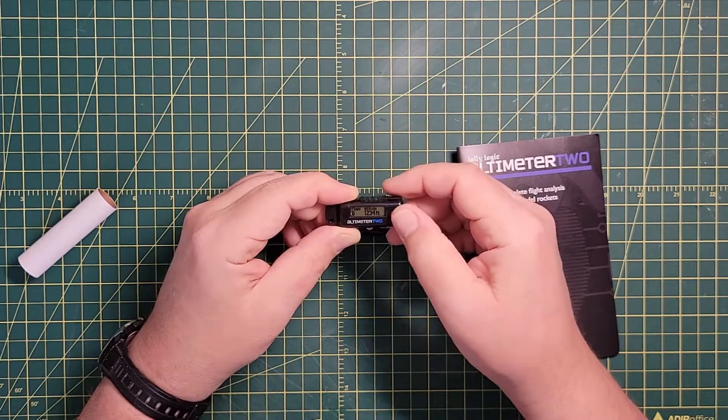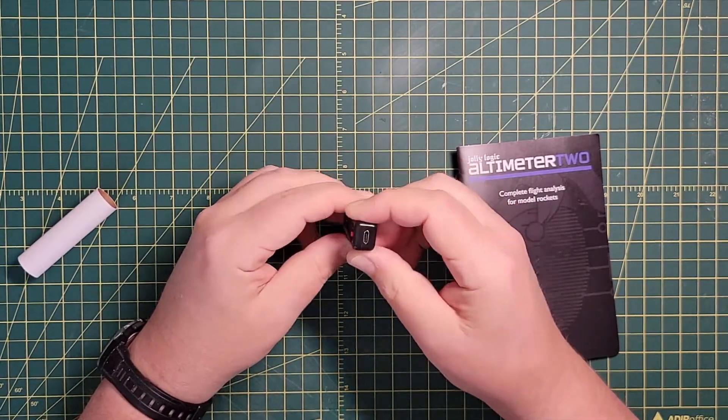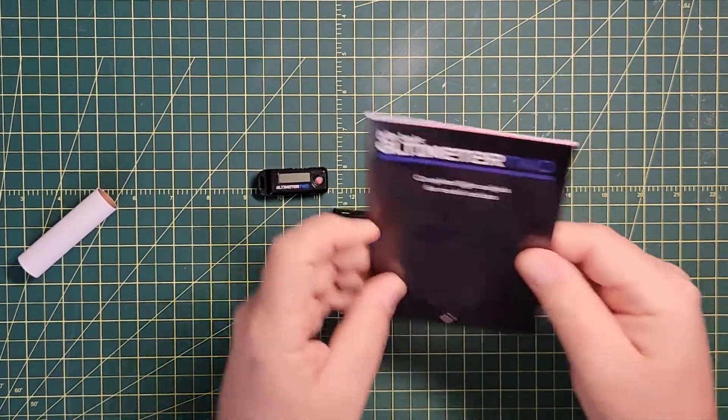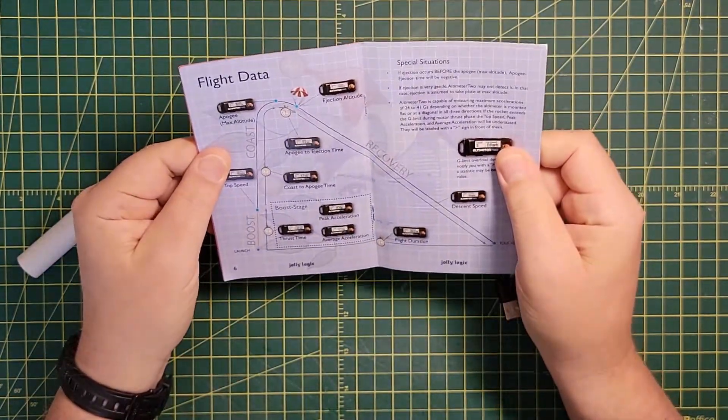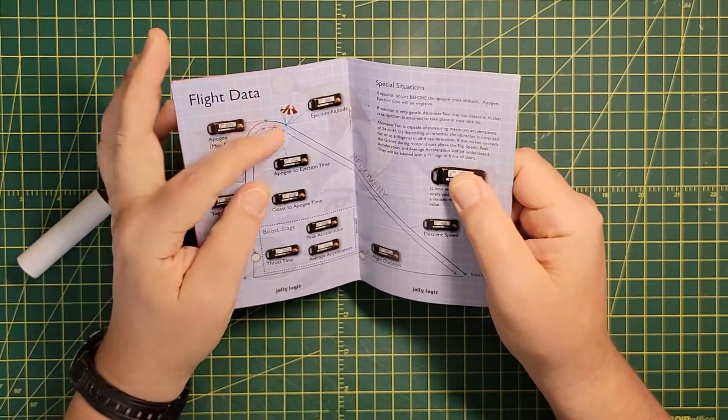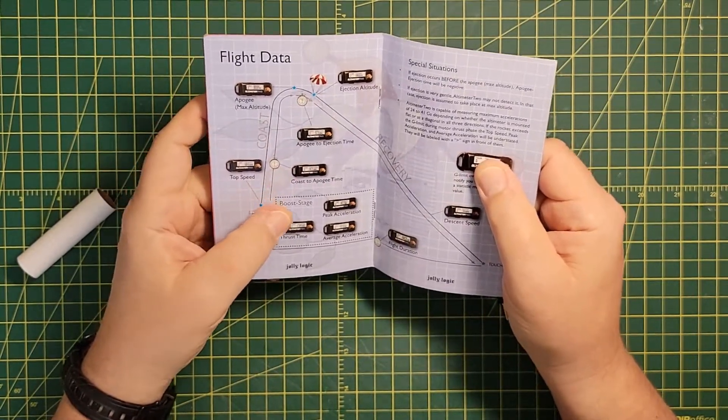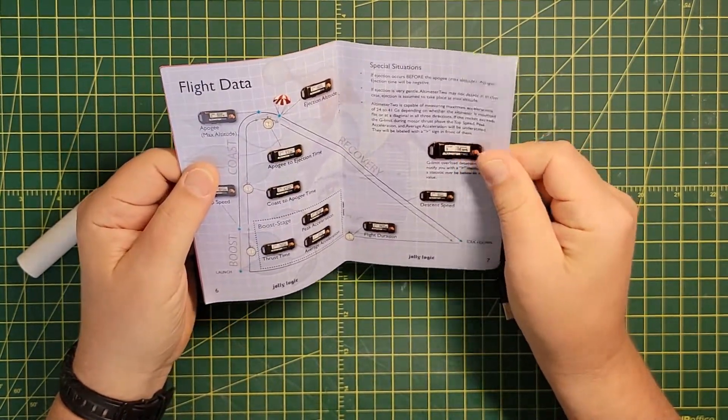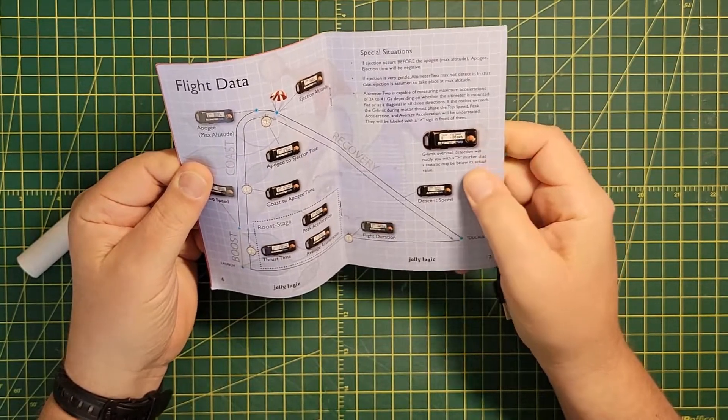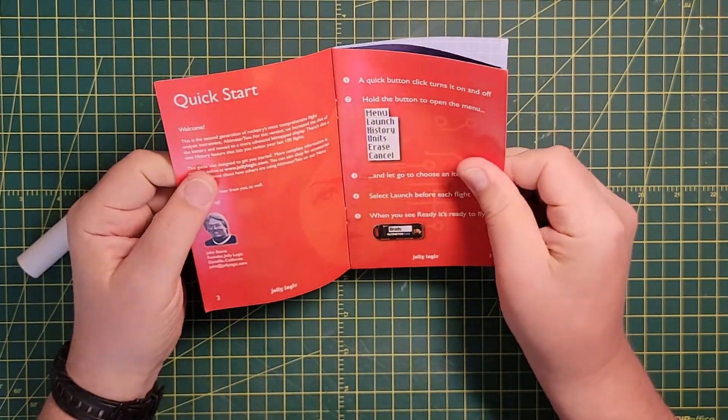It tells you flight zero. I believe it has a whole range of settings you can see on it. So you can see top speed, apogee, ejection altitude which is what most people are interested in, ejection time, coast to apogee, thrust time. So you can see there's a lot of information. It'll even tell you if it's overloaded on the Gs.